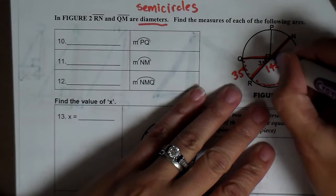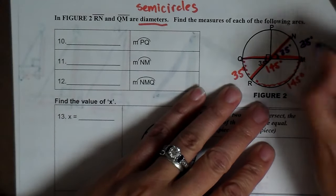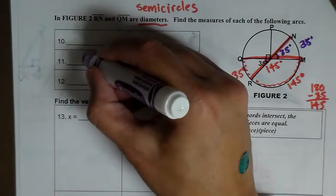Now, this angle and this angle are vertical. So that means that's 35. And so is that. So NM is 35 degrees.